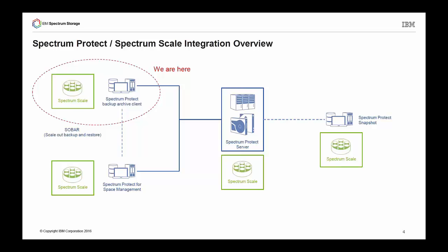Slide number four gives you an overview of the different topics where Spectrum Protect and Spectrum Scale integrate. In the middle of the slide, you can see the Spectrum Protect Server. The integration here means that the Spectrum Protect Server can store storage pools of different types, for example, file or container pools or random disk pools in Spectrum Scale file systems, and can take benefit of the advanced Spectrum Scale storage features to have a higher throughput for backup and archiving against the Spectrum Protect Server. On the right hand, Spectrum Protect Snapshot is shown, which integrates with Spectrum Scale and uses the software Snapshot facilities of Spectrum Scale to protect your environment.